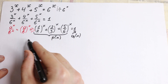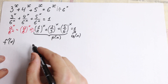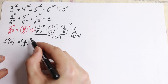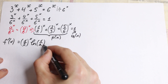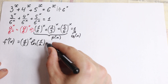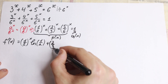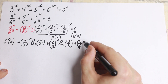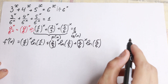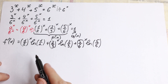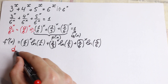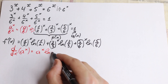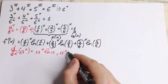Let's find f prime of x. We will have one half to the power x times natural log of one half, plus 2 thirds to the power x times natural log of 2 thirds, plus 5 over 6 to the power x times natural log of 5 over 6. This is the derivative, using the rule that d/dx of a to the power x equals a to the power x times natural log a, where a to the power x must be positive.